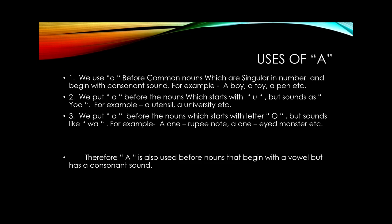Now let me proceed to number two. We put 'a' before nouns which start with 'u' but sound as 'you'. Say for example, a utensil, a university, etc. Whenever a word starts with 'u' — say for example, umbrella — the initial letter 'u' is pronounced as 'a'. But in these examples, the words that start with 'u' are pronounced as 'you', not 'a'. That's why, as the pronunciation here is somehow exceptional from the general one, we have to put 'a' before these words, although they have started with a vowel letter.